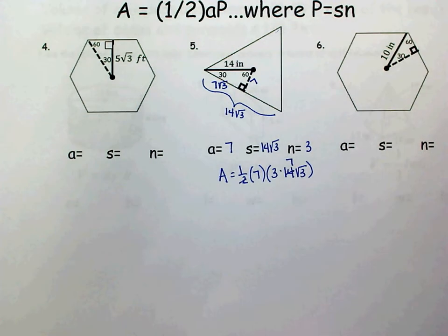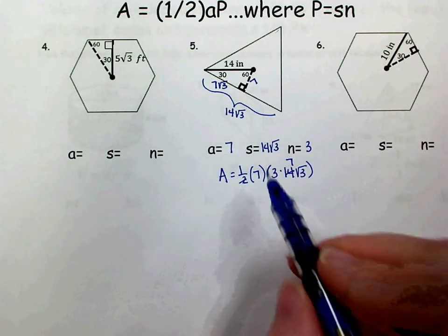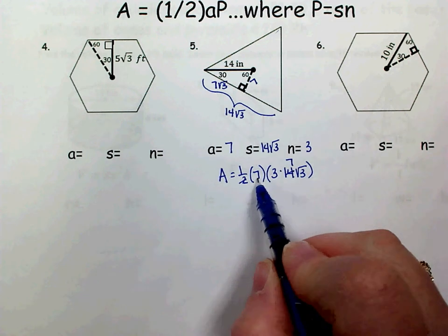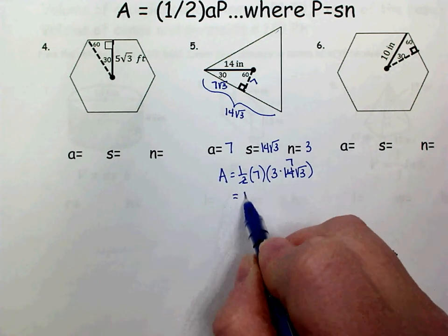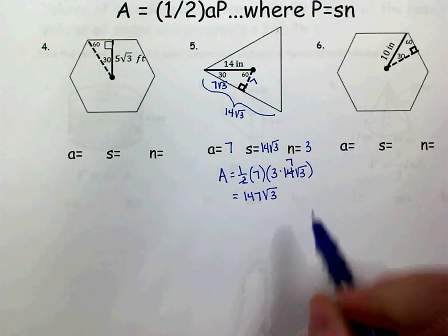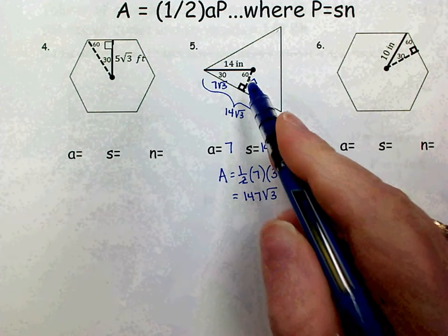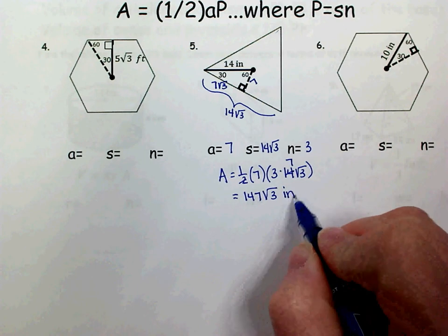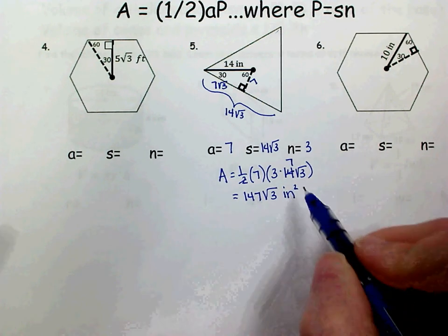So I can do half of 14, which is 7. And then I can do the 7 times the 7, which is 49. And then the 49 times the 3, which is 147. Of course, you could put that in your calculator as well. Don't forget the square root of 3. Your units were inches, and this is area, so it would be square inches.